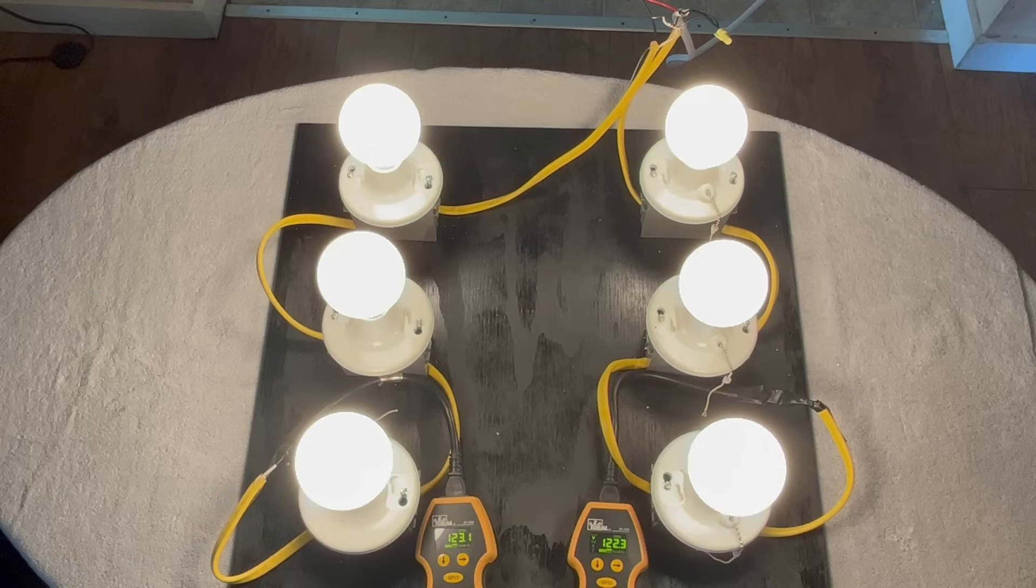If this lost neutral occurs on your house, then every light and appliance in your home is now running on a 240-volt circuit. Again, in this demonstration right now, it's acting like normal, because we have balanced loads. But let's watch what happens when the loads become unbalanced.